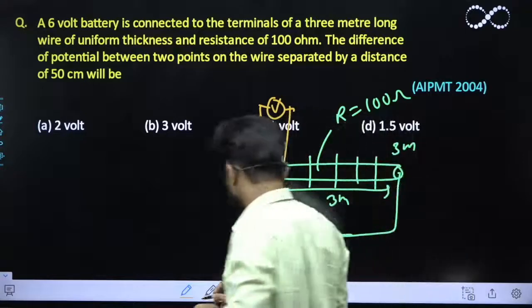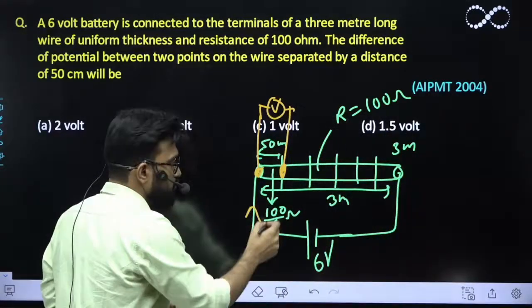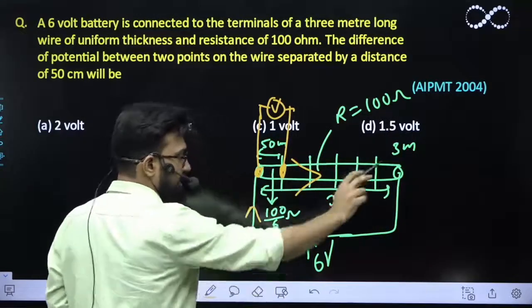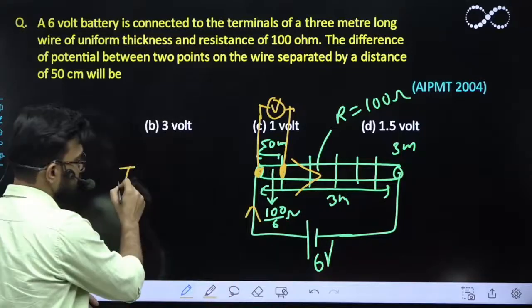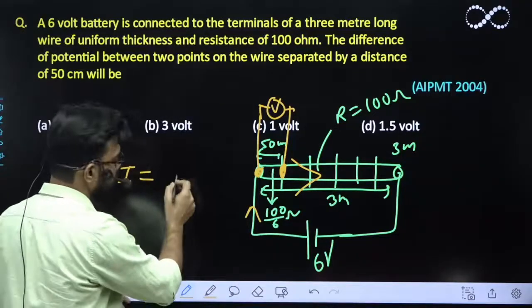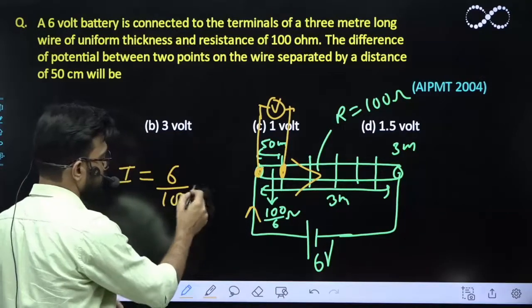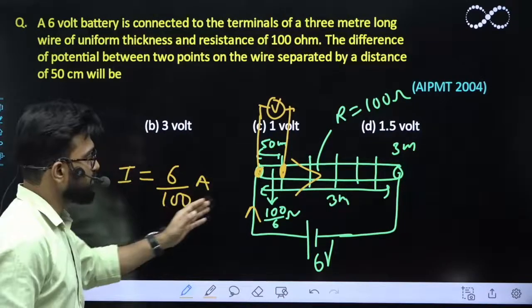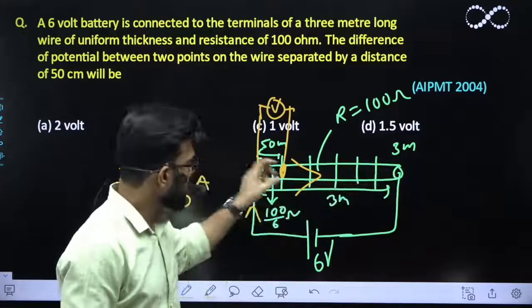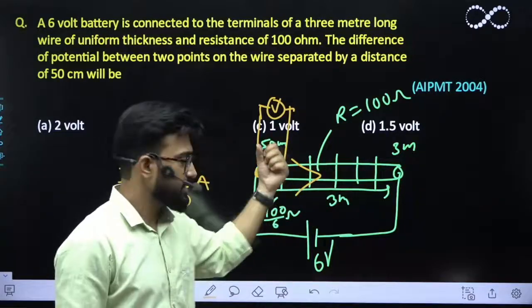Obviously what would be the current flowing through this wire? For the entire wire the current can easily be calculated as I equals V by R. So V is 6 volt and R resistance of this wire is 100 ohm. So this is the current which will be flowing through each section of this 3 meter wire.